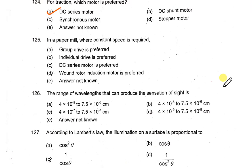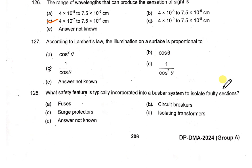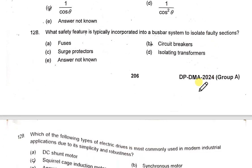The range of wavelengths that can produce the sensation of sight is 4 × 10⁻⁷ to 7.5 × 10⁻⁷ cm. According to Lambert's law, the illumination on a surface is proportional to cosine theta.